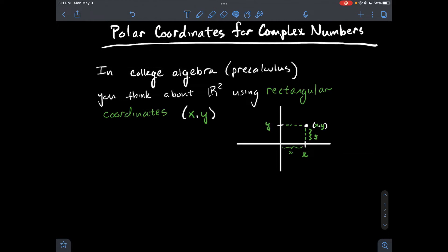In this video we're going to talk about polar coordinates for complex numbers. So in college algebra, or pre-calculus, or pre-college algebra, whatever they call it nowadays, you think of the plane R² typically using rectangular coordinates like x and y.